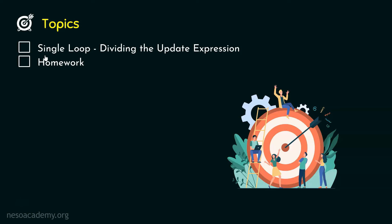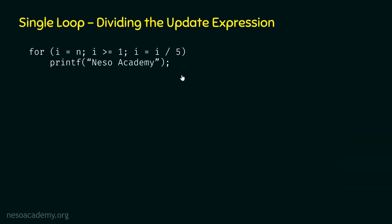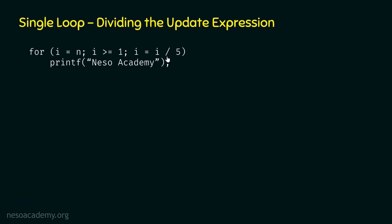Let's start with single loop dividing the update expression. This is the example loop and our job is to determine its time complexity. In this loop, i is initialized to n, the condition is i greater than or equal to 1, and the update expression is i equal to i divide by 5. This time we have a division symbol, not multiplication. The loop body contains the statement printf.